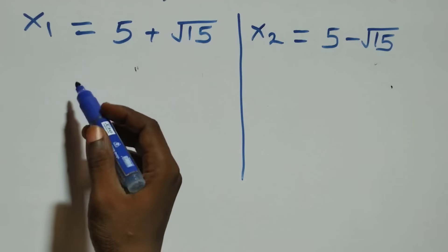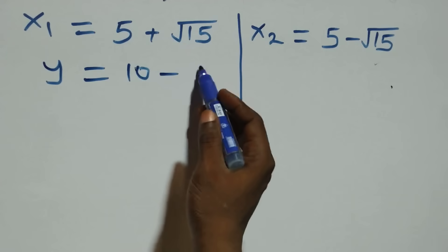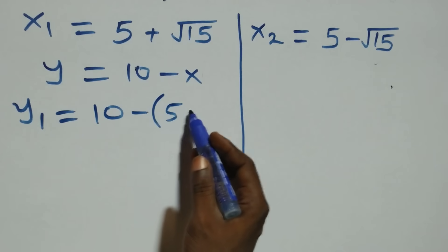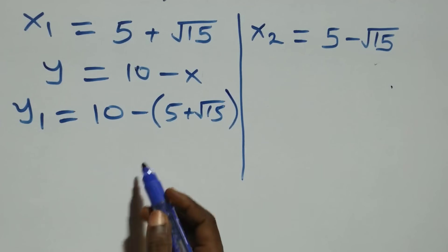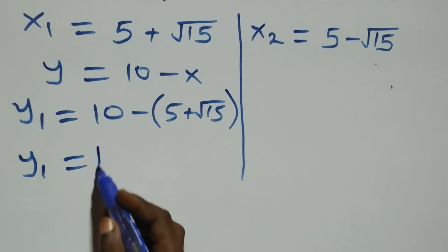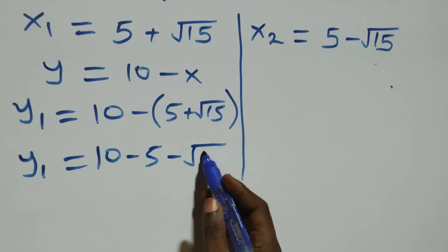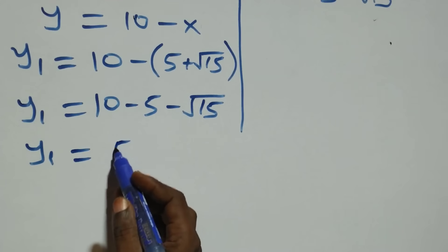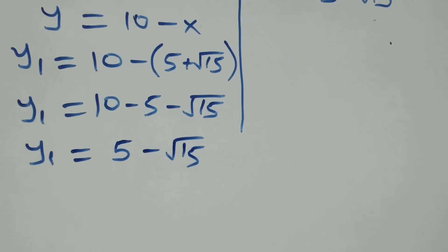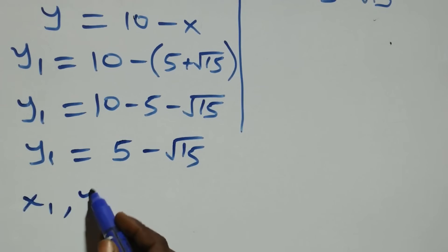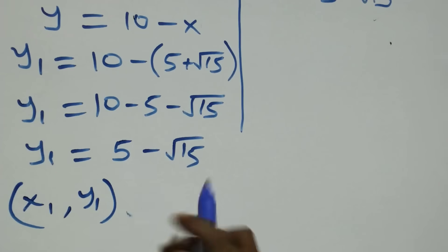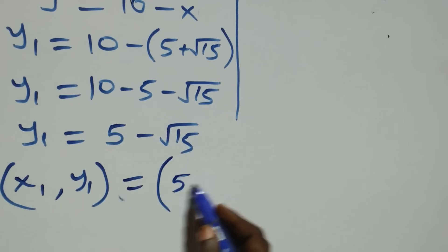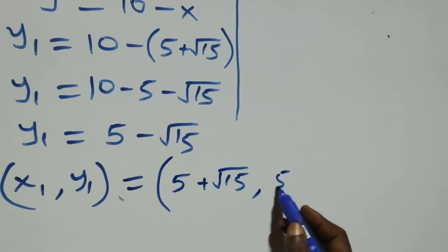We find the corresponding y values using equation three, which is y equals ten minus x. For the first solution, y one equals ten minus x one, which is ten minus (five plus root fifteen), giving y one equals five minus root fifteen. So the first solution set is x one equals five plus root fifteen, y one equals five minus root fifteen.